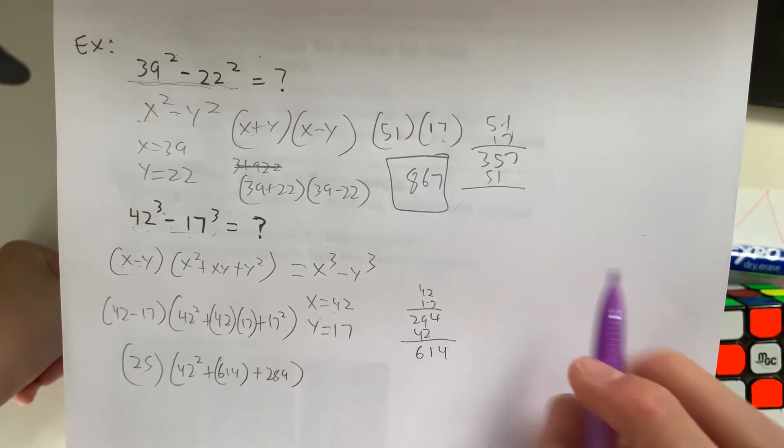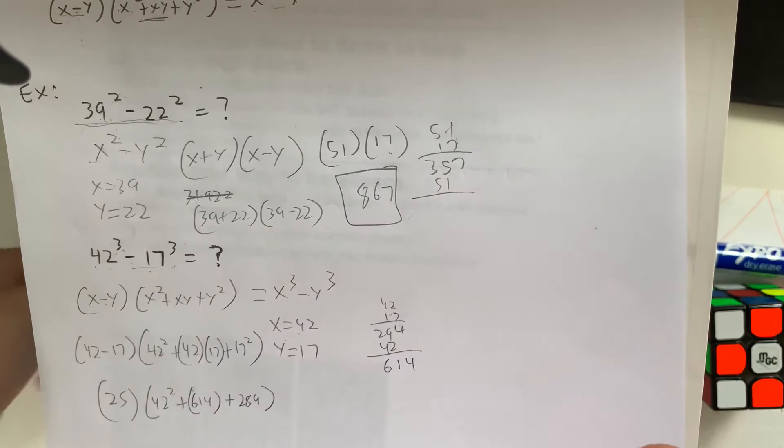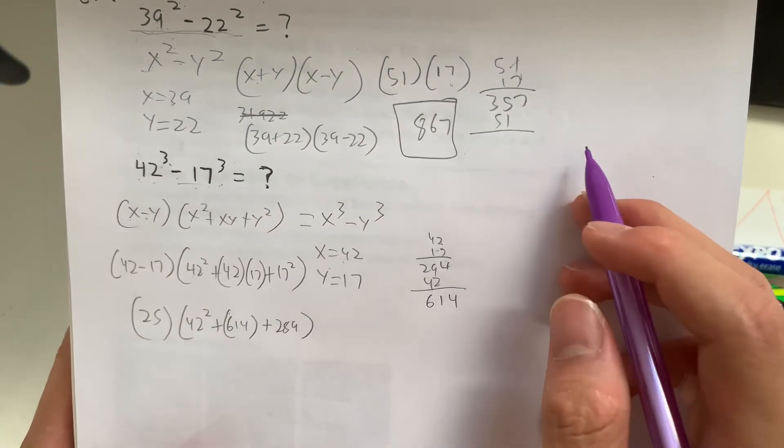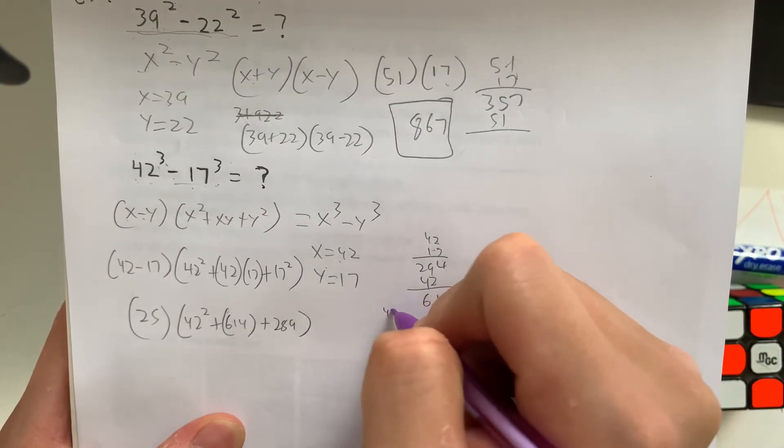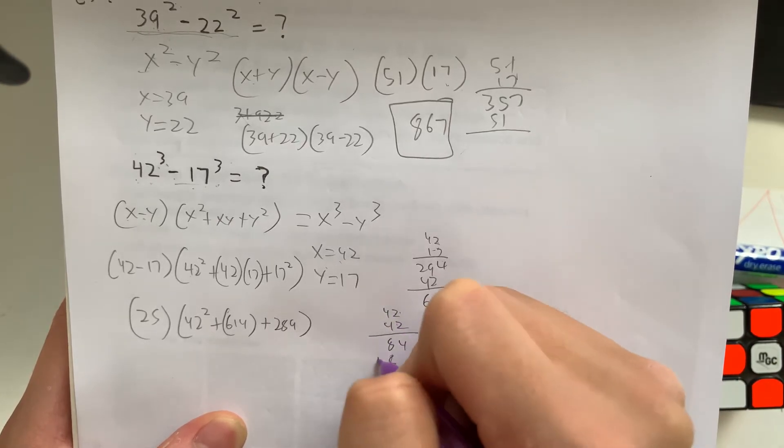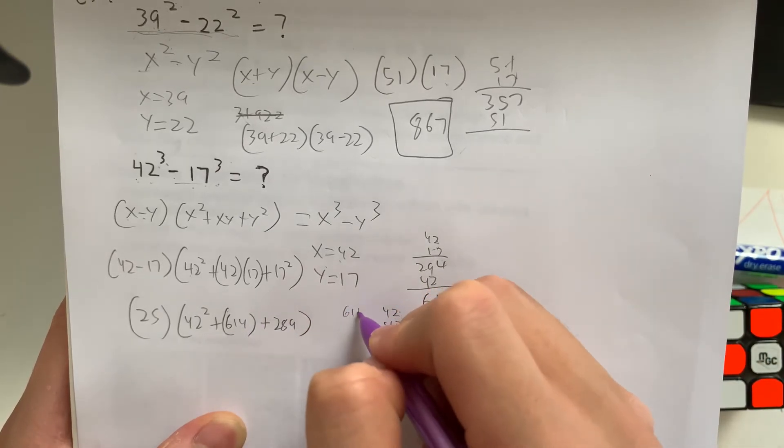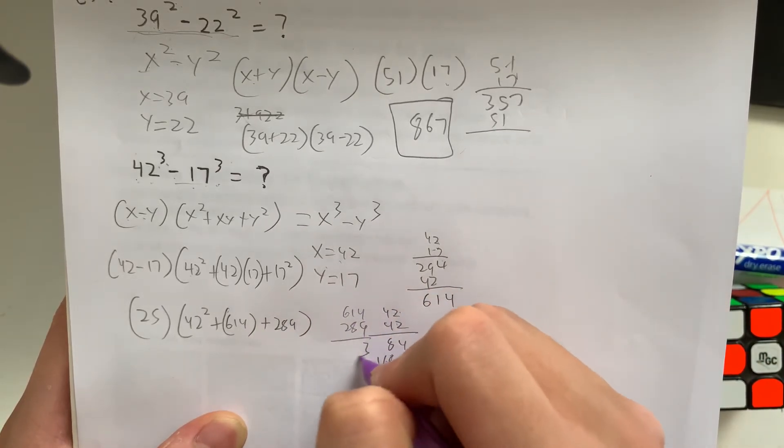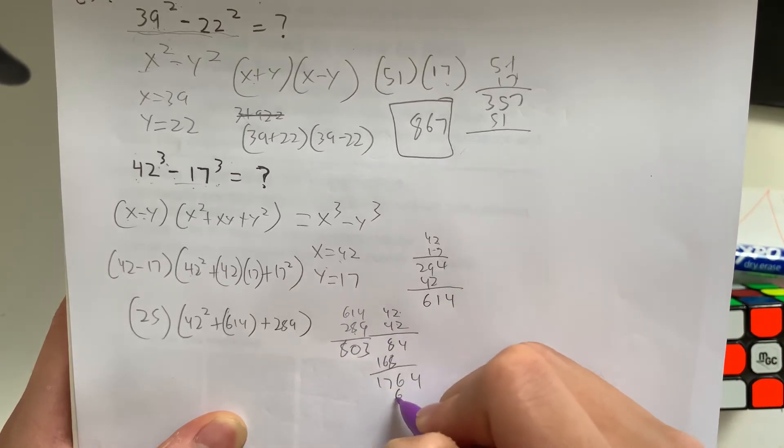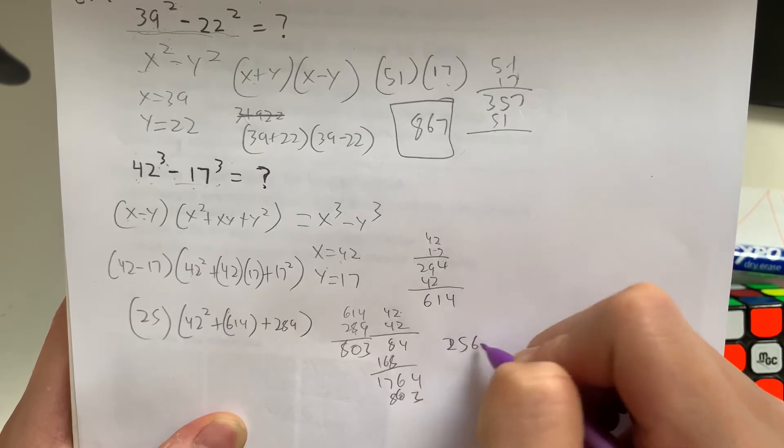So basically, in short, what is this? I'm going to do the math, so bear with me as I do a lot of multiplication. That's 84, 8, 16, that's 1, 7, 6, 4 plus 614 plus 289. That equals 3, 0, 8, 8, 0, 3, giving us 2,567.